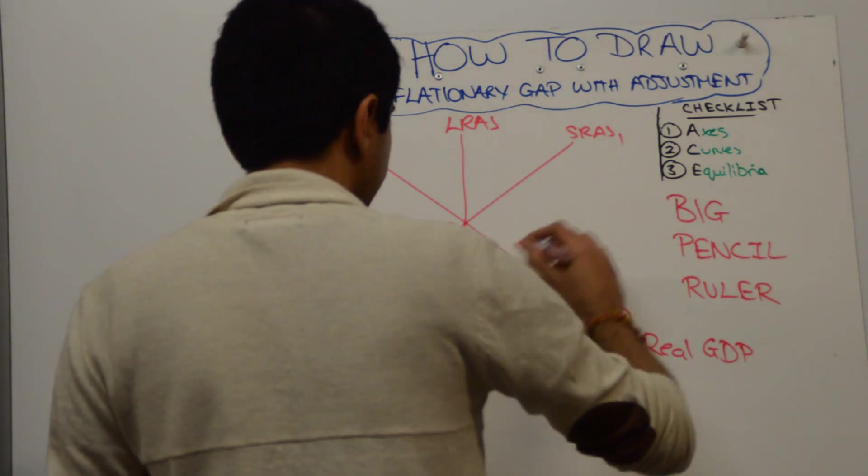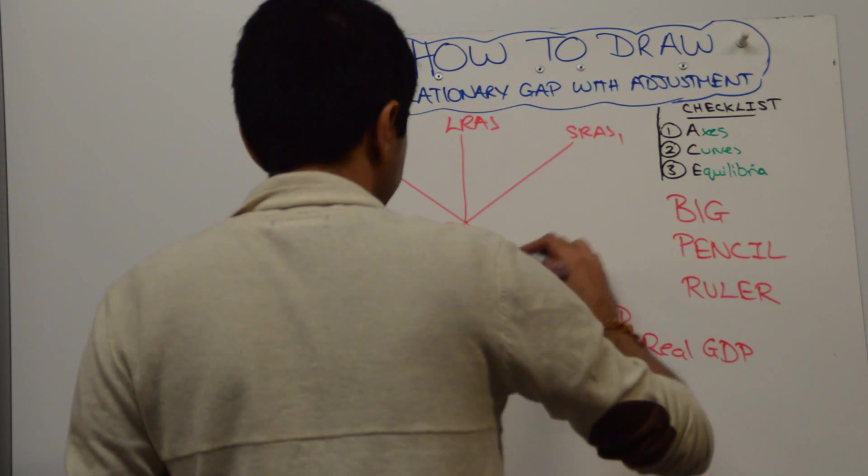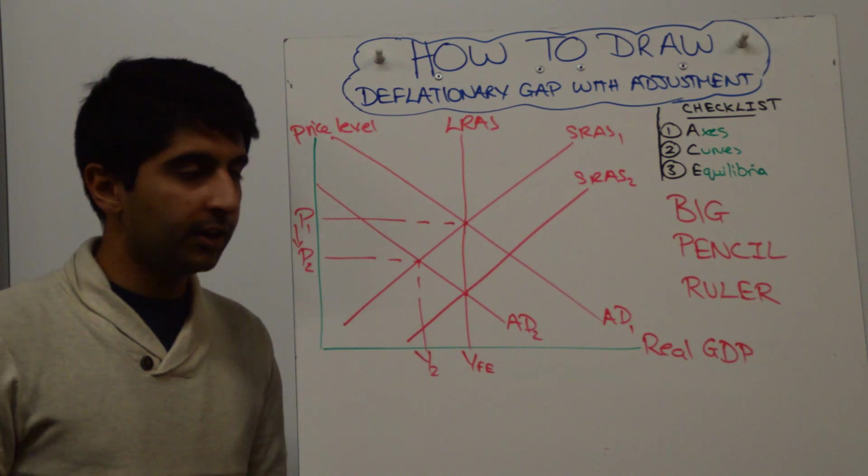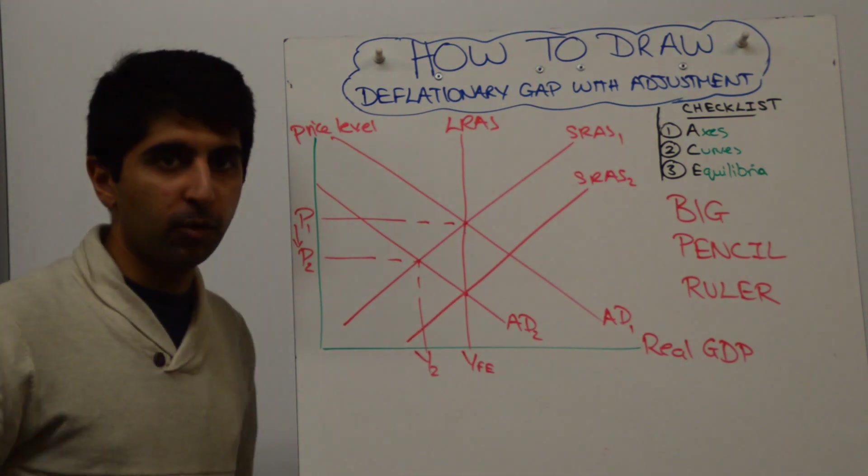Alright, so a parallel shift of SRAS, a ruler will help here, but that's pretty good. So a parallel shift to the right of SRAS, which takes us back to the full employment level of output.